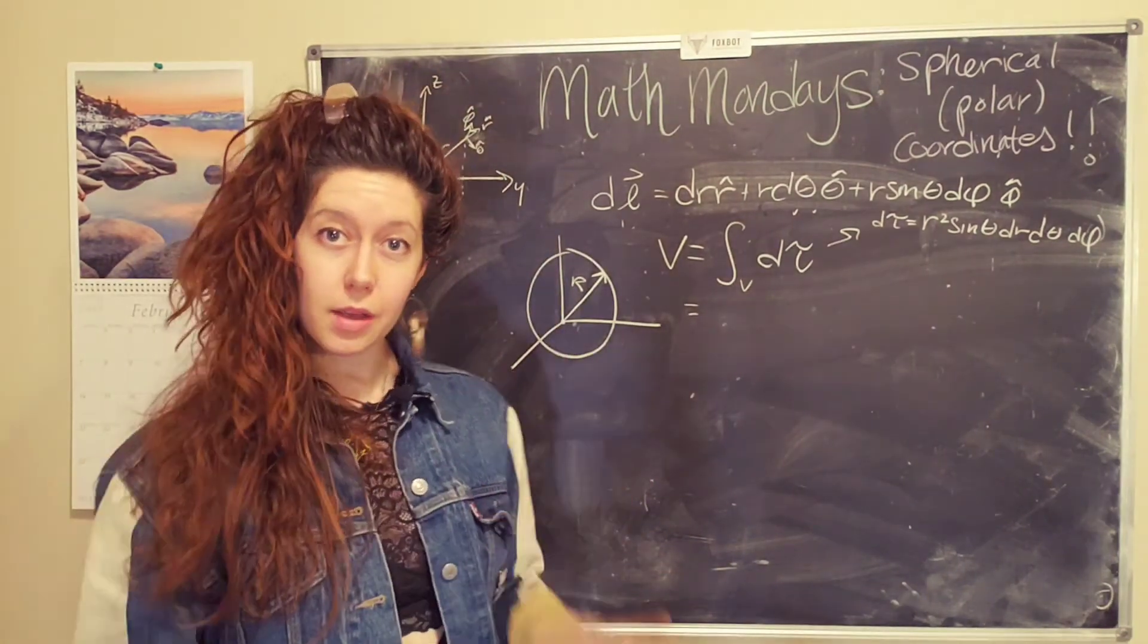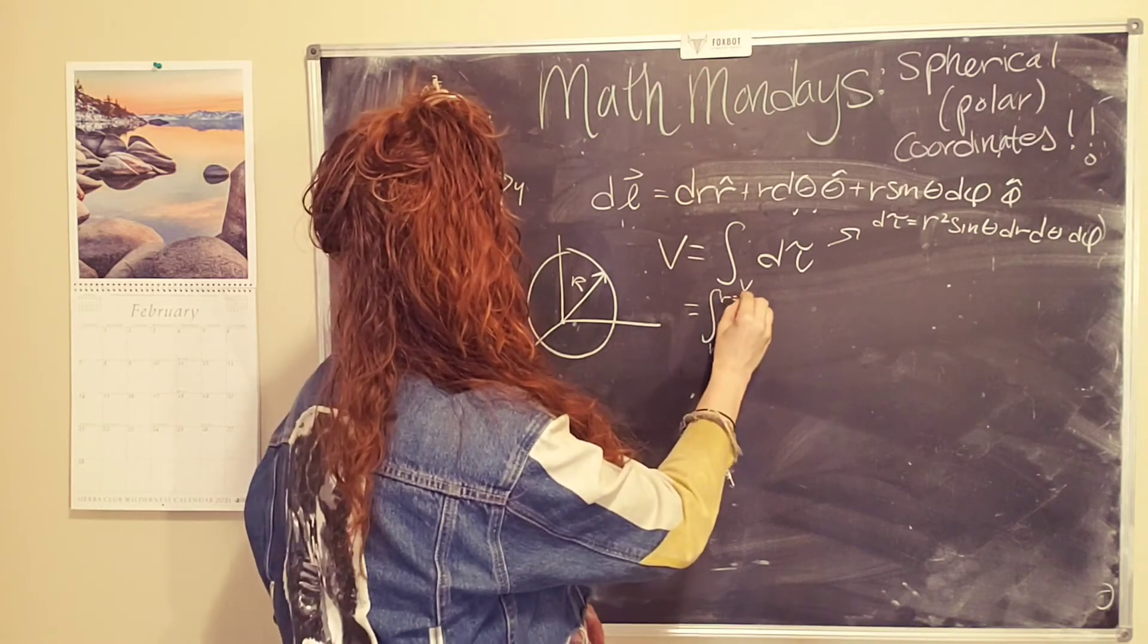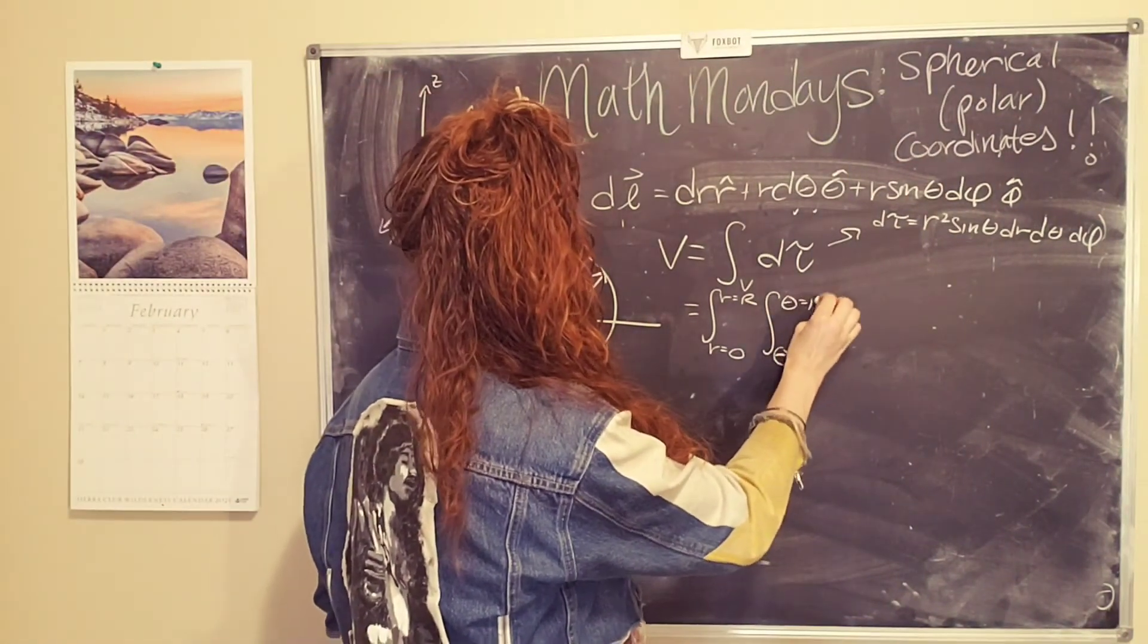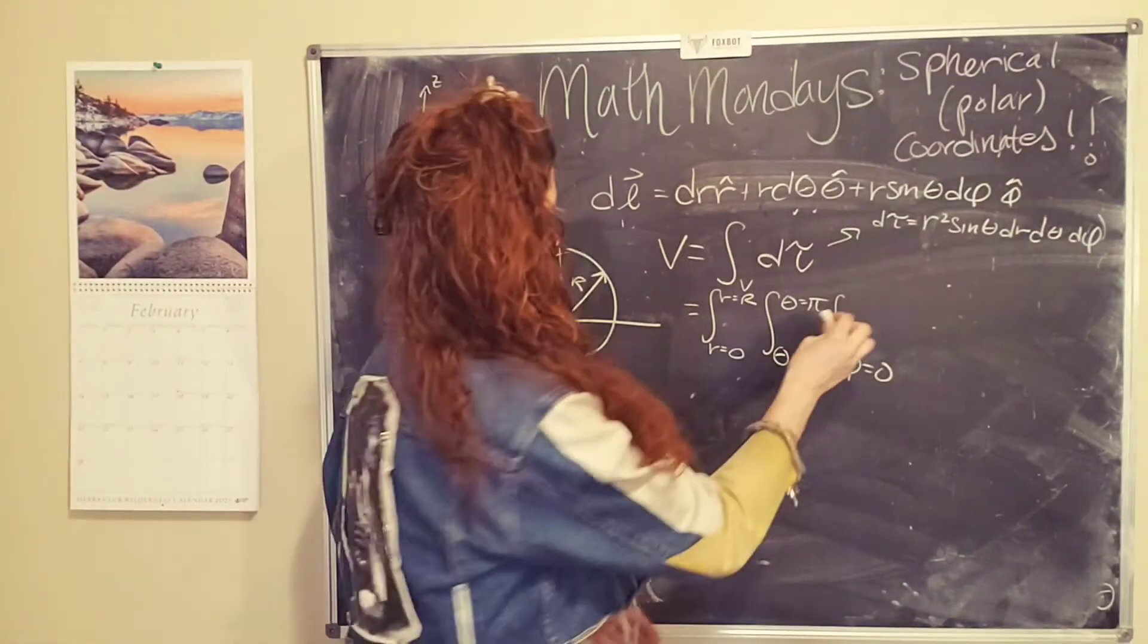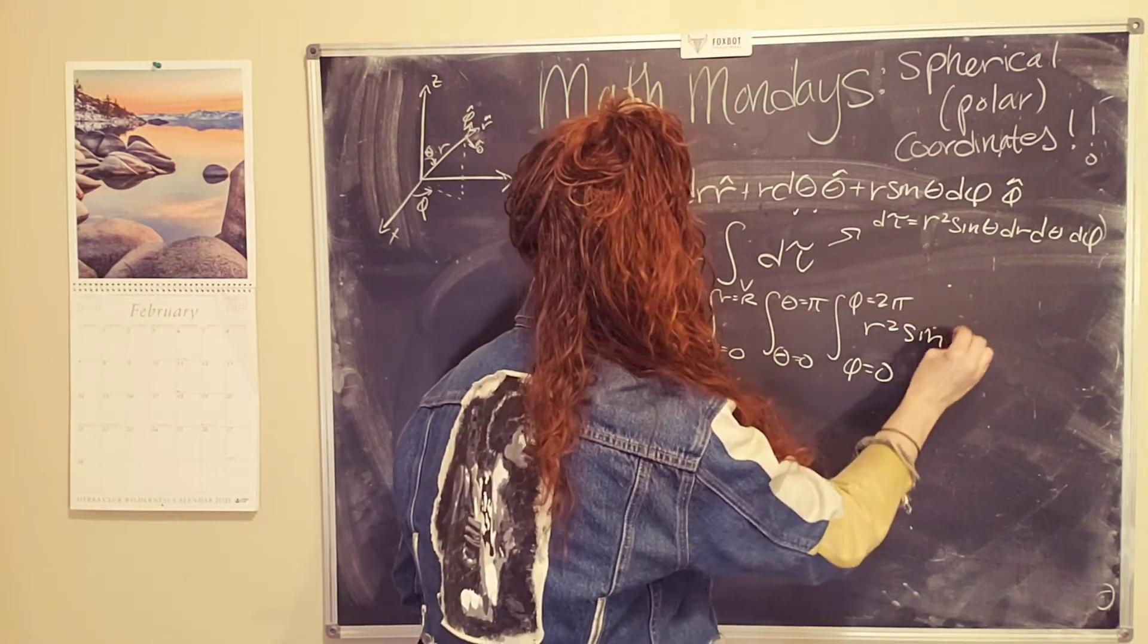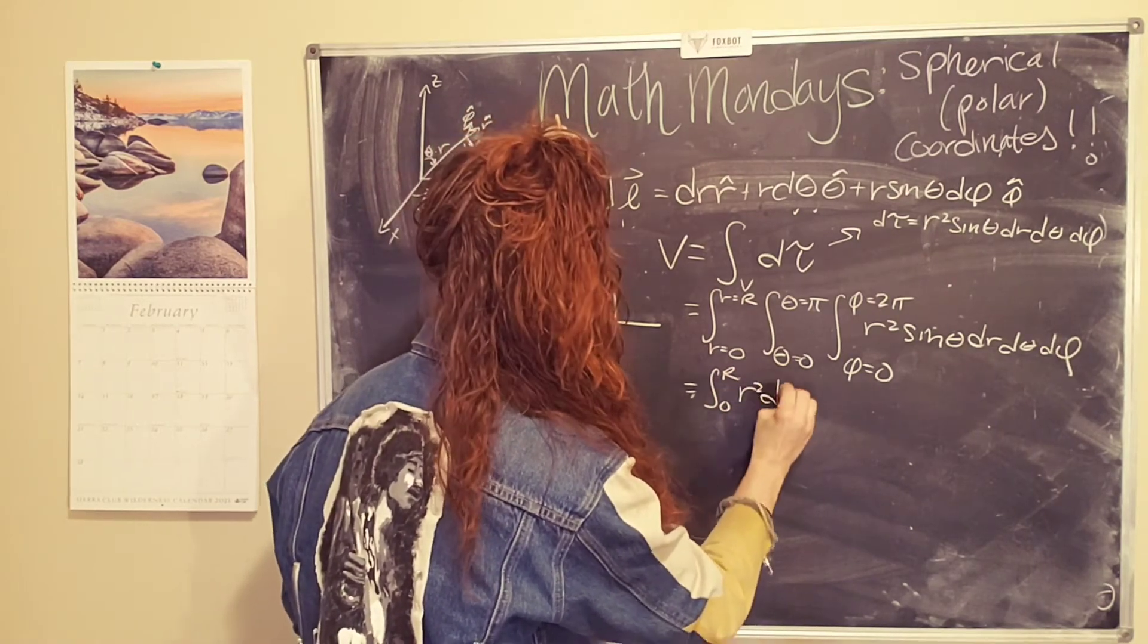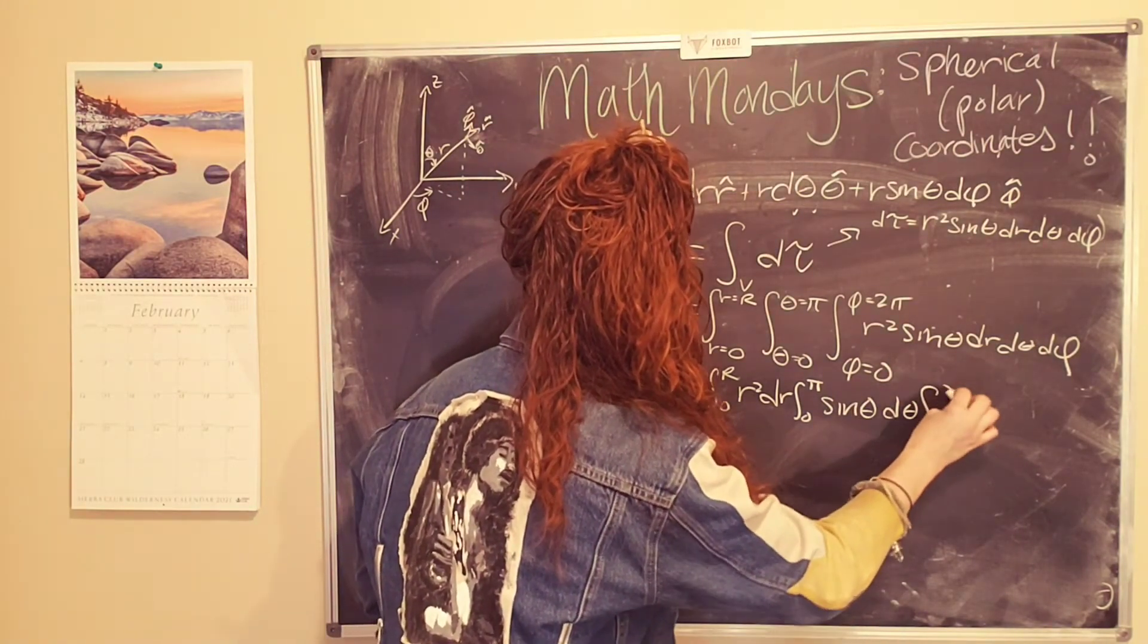And so now we can start to break the integral up into its three dimensions. So in the first direction we have R, which goes from zero to R equals big R. In the second direction, we have theta, which goes from zero all the way vertical to pi, or 90 degrees, all the way down to the xy plane. And then in our third direction, we have phi goes from zero and it sweeps all the way around the xy plane, or two pi. And then we'll put in D tau here. So we have R squared sine theta dr, d theta, d phi. Okay, cool. And now we just need to move these pieces into the integrals and run through the integral. So we end up with zero to R, R squared, dr, zero to pi, sine theta, d theta, and zero to two pi of d phi. Boom.